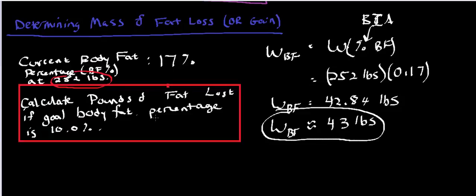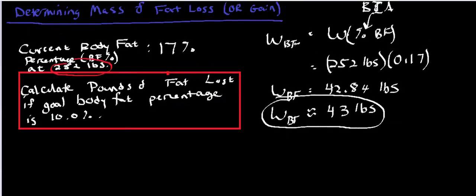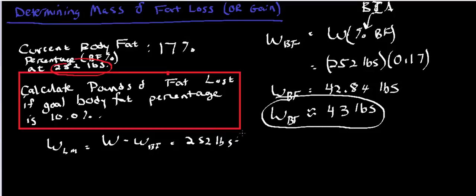Now I want to calculate the pounds of fat loss if the goal body fat percentage is 10%. Now that we know the weight of body fat initially in this 252-pound individual, we need to find the weight of the lean mass. The weight of lean mass is just the total weight minus the weight of body fat — 252 minus 43 — so the lean mass is approximately 209 pounds.